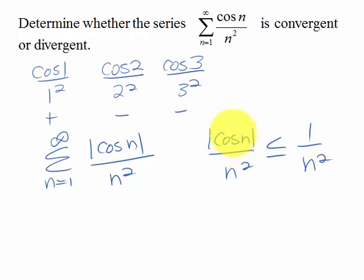because the largest that cosine will ever be is 1, and so I can put this 1 over n squared as a bound, and this is a convergent p series with p equaling 2. And since all of the terms